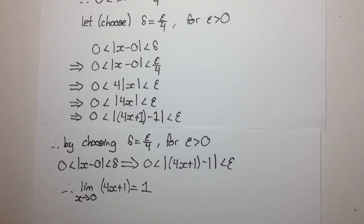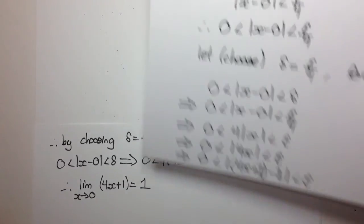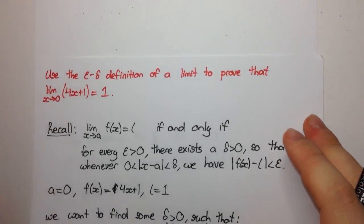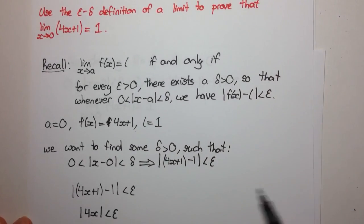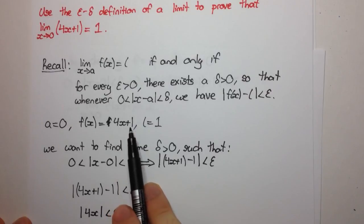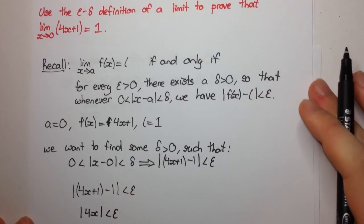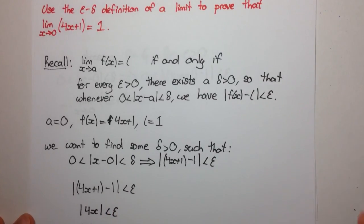So you can see epsilon-delta proofs they are a bit tricky but they're definitely doable especially when we're working with linear functions like 4x plus 1. Now they do get harder when we have stuff like trig functions or quadratic functions but we'll see how to do those in later videos as well. So hope you enjoyed this video and thanks for watching.